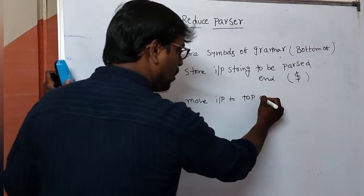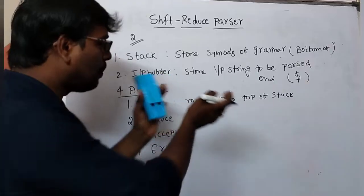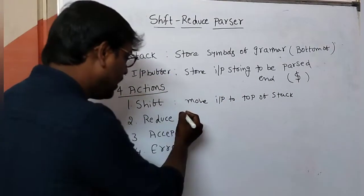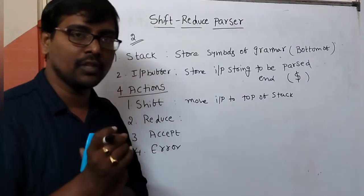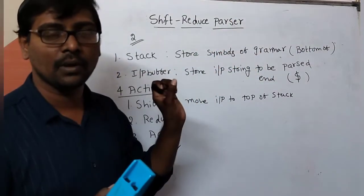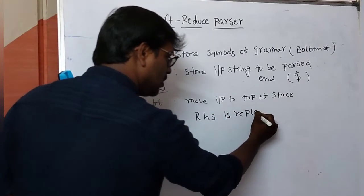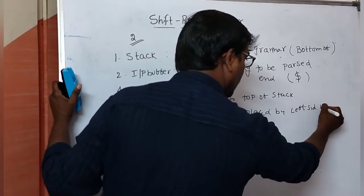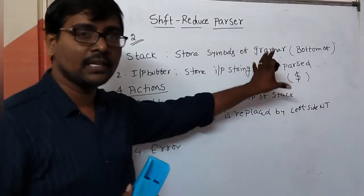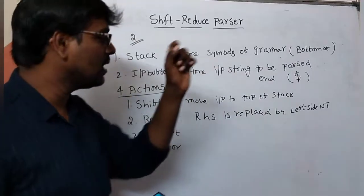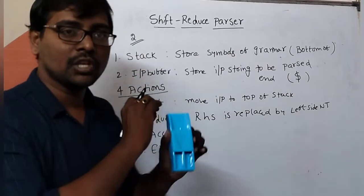The shift operation means moving the input symbol from the input string to the top of the stack — that moving is called a shift operation. For reduce: any symbol on the top of the stack that matches the right-hand side of a grammar production is replaced by the left-hand side non-terminal.